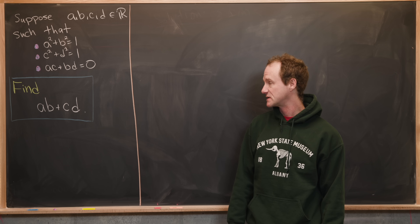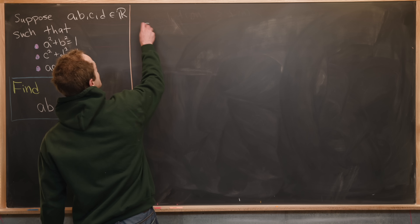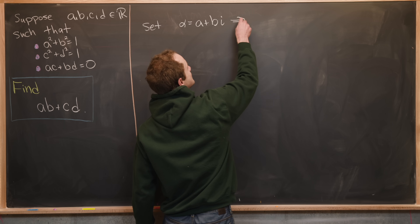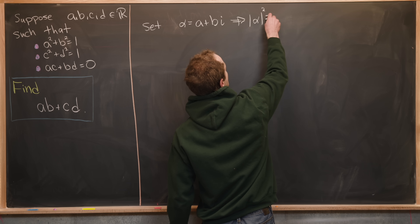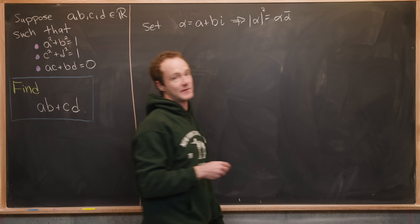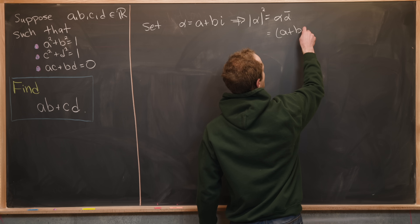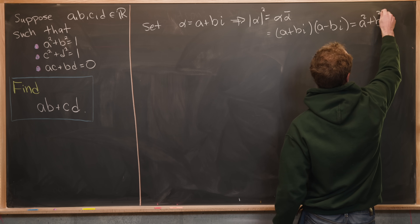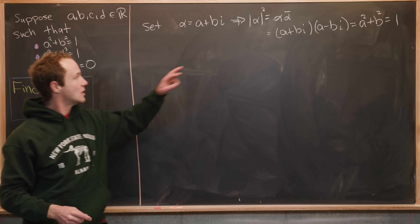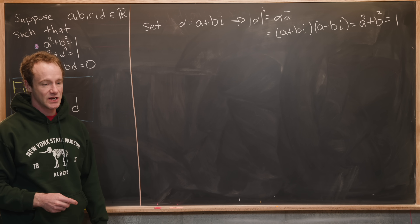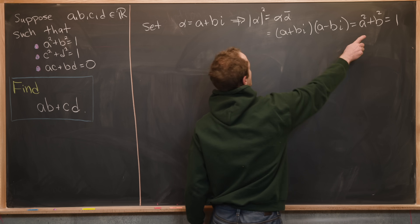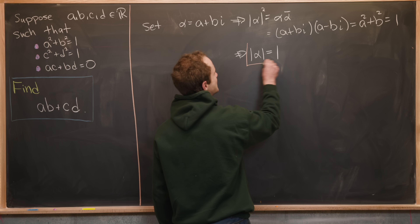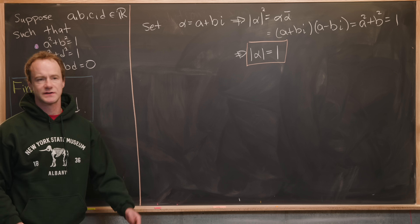We're going to use some tools from the arithmetic of complex numbers. First, set alpha equal to a plus bi. Notice that the modulus of alpha squared, which equals alpha times alpha-conjugate, is equal to a plus bi times a minus bi, which is a squared plus b squared, which equals one. Since the modulus is always non-negative and squares to one, the modulus of alpha must equal one. Let's box that because it's important.